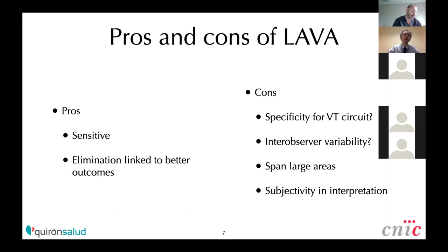LAVA has pros and cons. The pros are clear: it is very sensitive and elimination is linked to better outcomes. The cons are that the specificity for delineating the VT circuit among all those components is unknown. There is unknown inter-observer variability, they span large areas of myocardium, and there is a lot of subjectivity in interpretation.